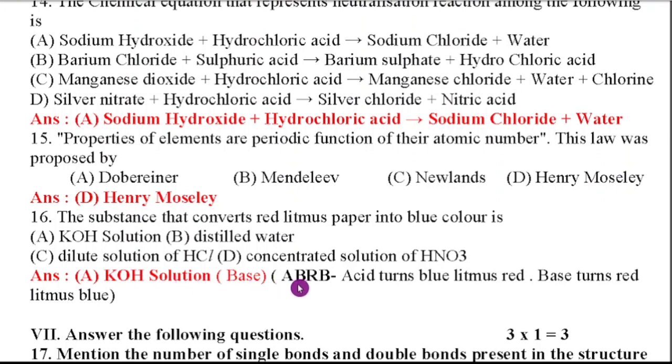So one thing children, here I have given in the bracket that is ABRB. ABRB means what? Acid turns blue litmus paper to red litmus. So base turns red litmus to blue, vice versa. So just you remember this, it will be useful for your exam also.